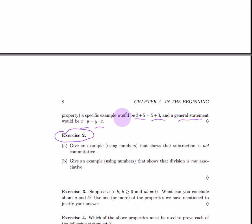Exercise two shows that these properties do not necessarily hold for all operations. For instance, subtraction is not commutative. Division is not associative. Give a specific example to show each of these statements.